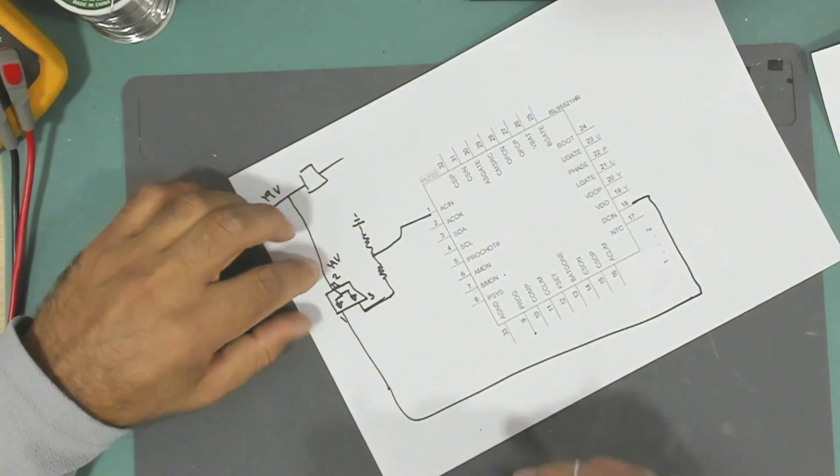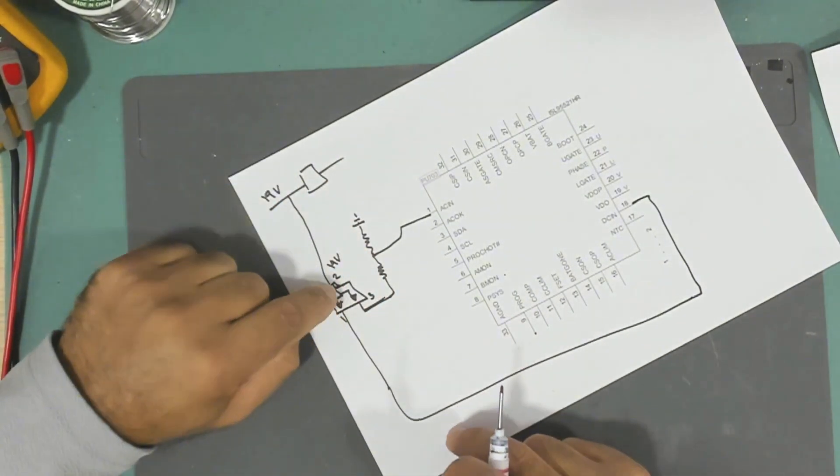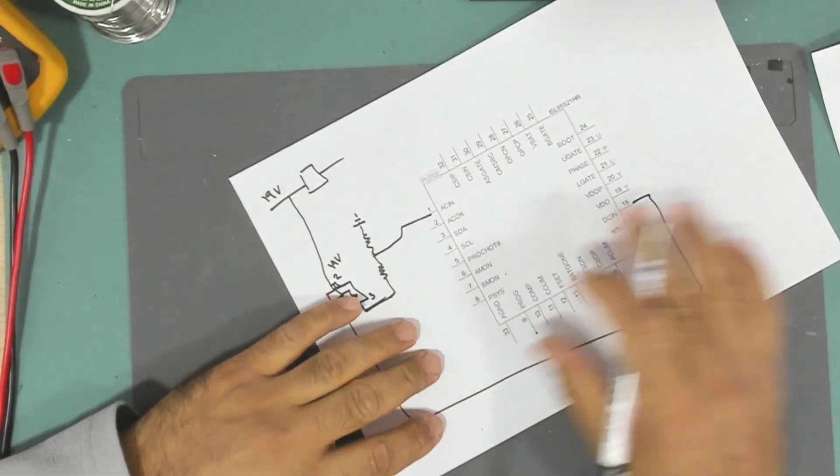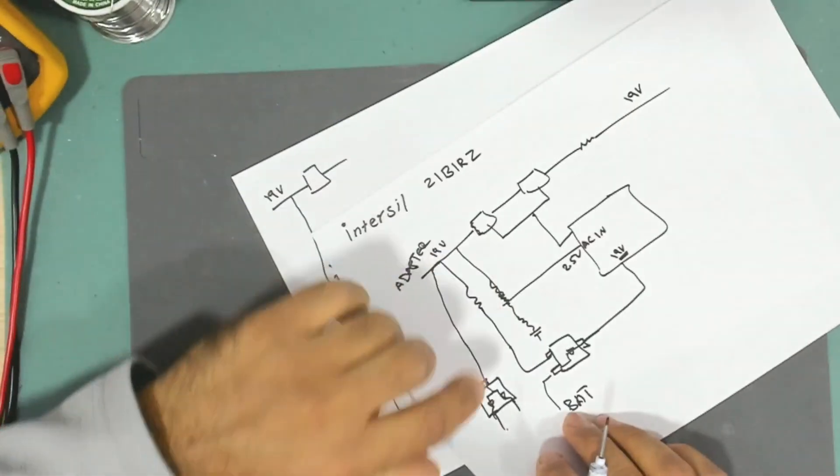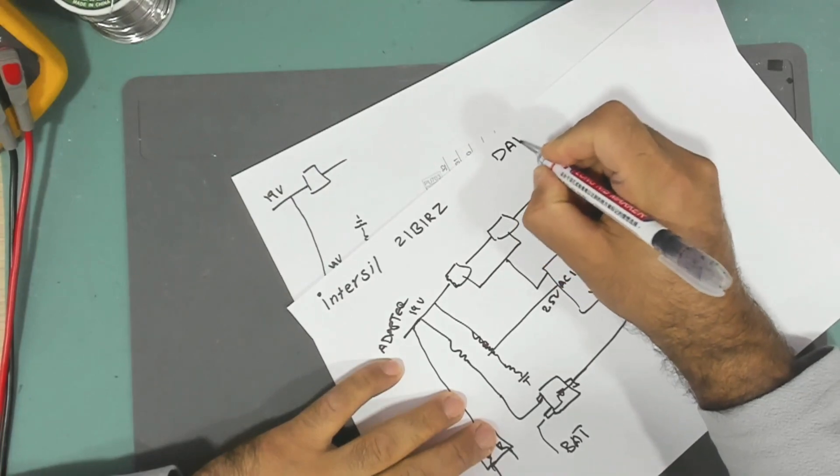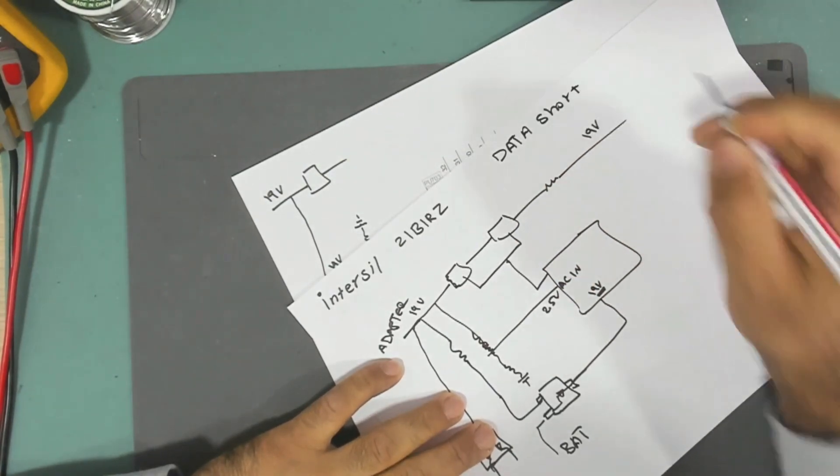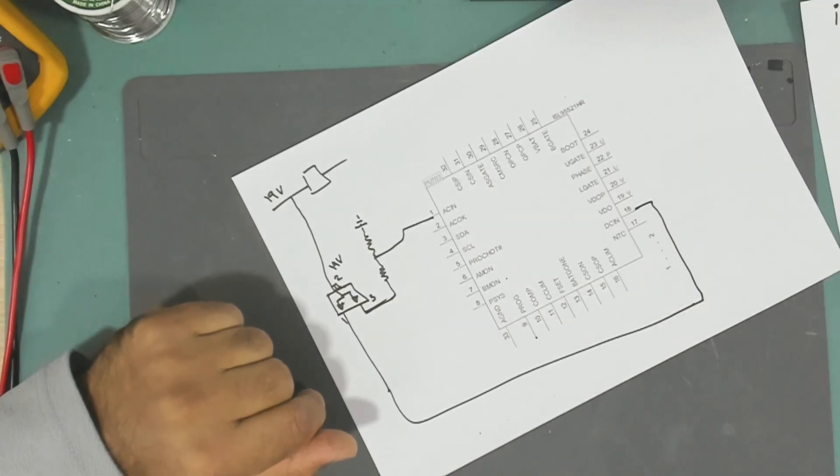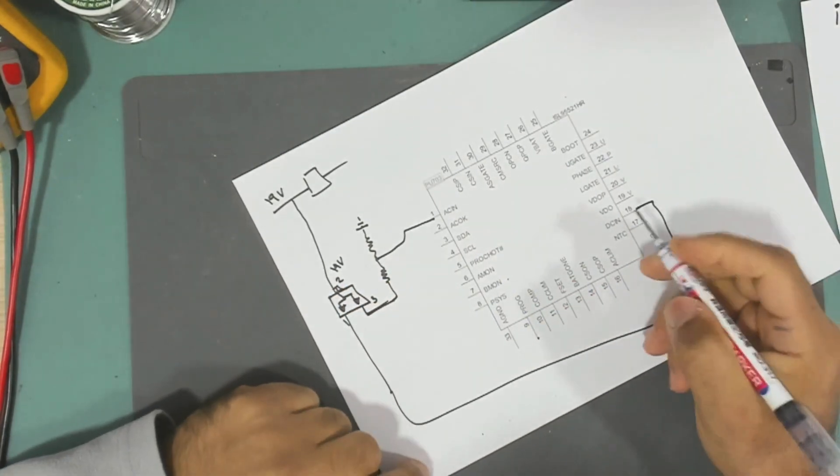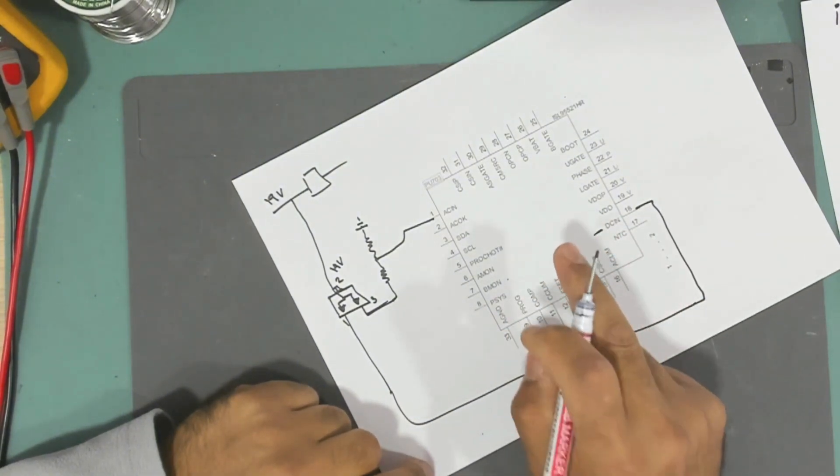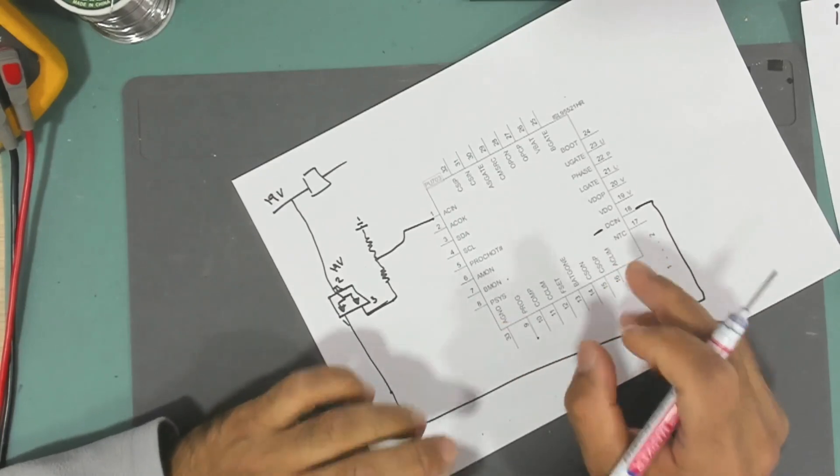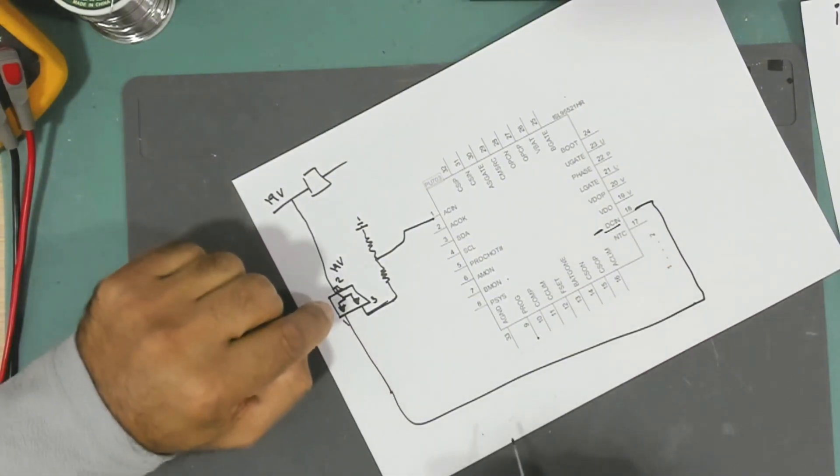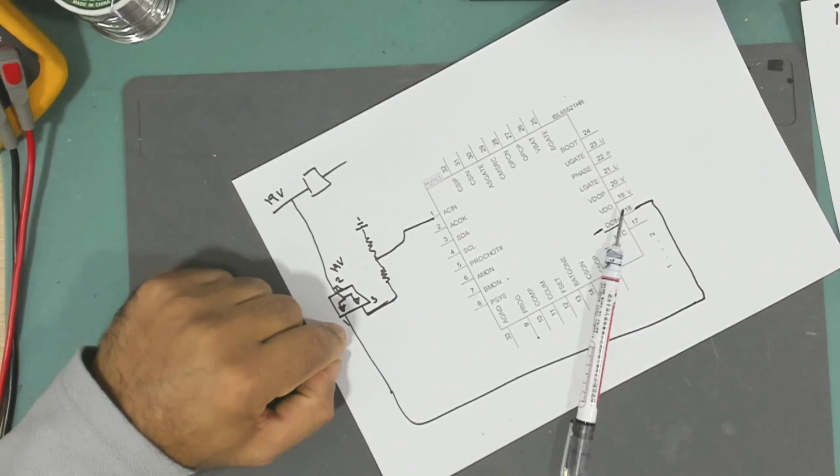I didn't know that I would have to work on it for a long time because this was the first time I'm seeing this topology. There is nothing at all on the internet. If you try to find any information about this IC, the Intersil 21P IRZ, you will only find a so-called data short, which is a brief description about this IC. It doesn't tell you anything about the pinout of the IC. I wasn't even sure what pin is the DC in, until I found this picture from BadCaps. It really helped me.